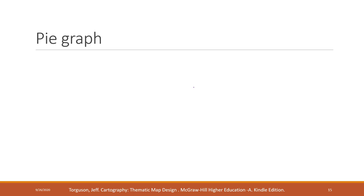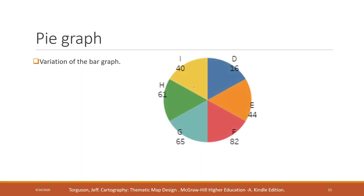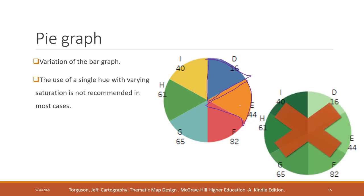The last one I want to discuss is the pie graph. A pie graph is a variation of the bar graph, but instead of using length, it uses area — a two-dimensional size — to compare values in different categories. For a pie graph, you should use different types of colors, or different hues. Do not use a single hue; we will talk about hue in color theory later this semester.